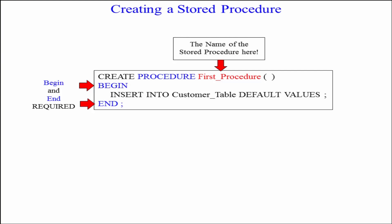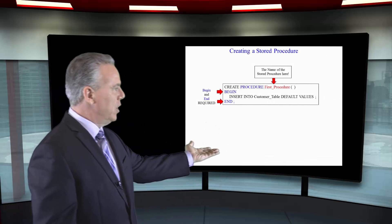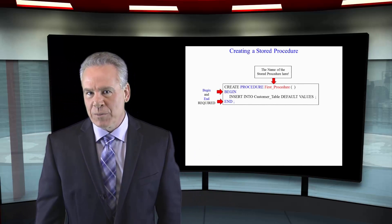Now take a look at this. We're going to create a procedure — I called it 'first_procedure', whatever you want to call it is fine. You will always have an open paren and close paren, even if there is nothing inside it. Then I'm going to have a begin and an end statement for every single procedure I create. In between my begin and end, that's when I'll start to actually do some things. Here I'm going to insert into the customer table with default values, and we'll run this procedure next.